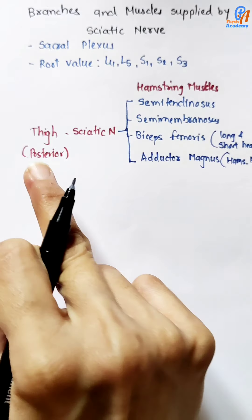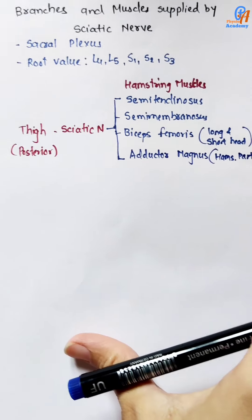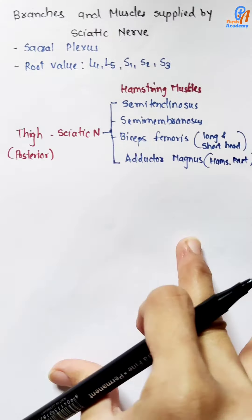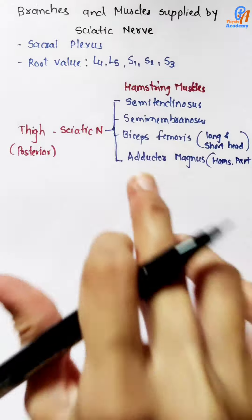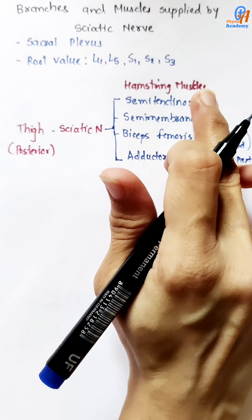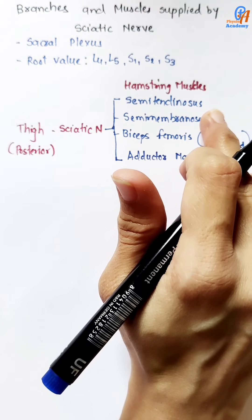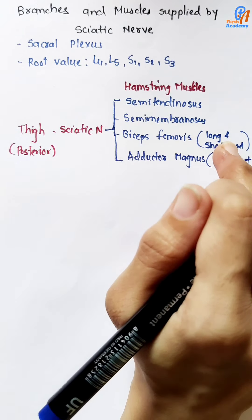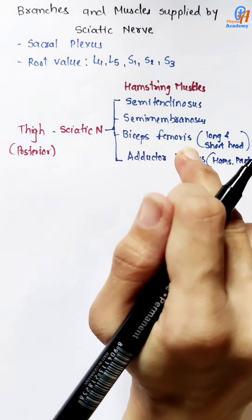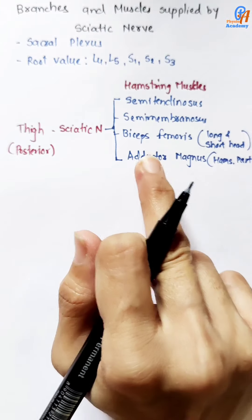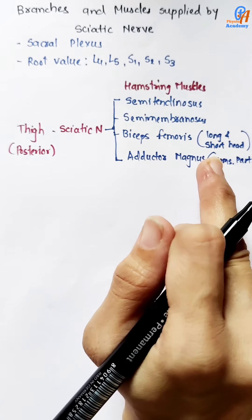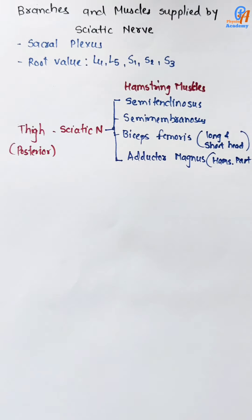In the posterior part of the thigh, the sciatic nerve supplies semitendinosus, semimembranosus, both the long and short head of biceps femoris, and the hamstring part of the adductor magnus muscle.